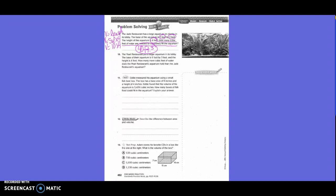The Pearl restaurant put a larger aquarium in its lobby. The base of the aquarium is 6 feet by 3 feet, and the height is 4 feet. How many more cubic feet of water does the Pearl restaurant's aquarium hold than the Jade's restaurant? So we need to circle 6 feet, 3 feet, and 4 feet. What's my formula? Volume equals 6 times 3 times 4. Volume equals 18 times 4. What is 6 times 12? 72. So this one would be 72. Is that what they want for our answer? 72 minus 40. Because I want to know what the difference is. So what would that be? 32 cubic feet.